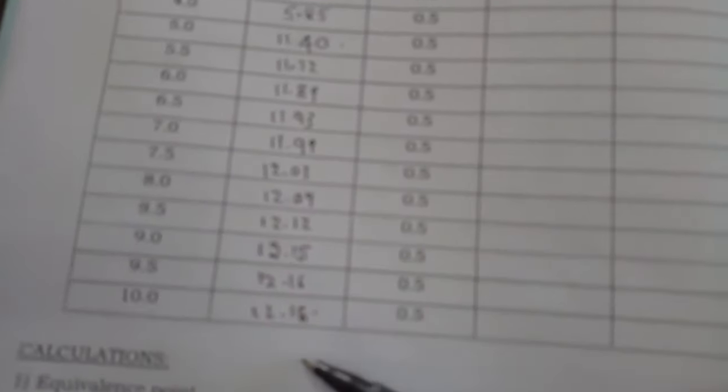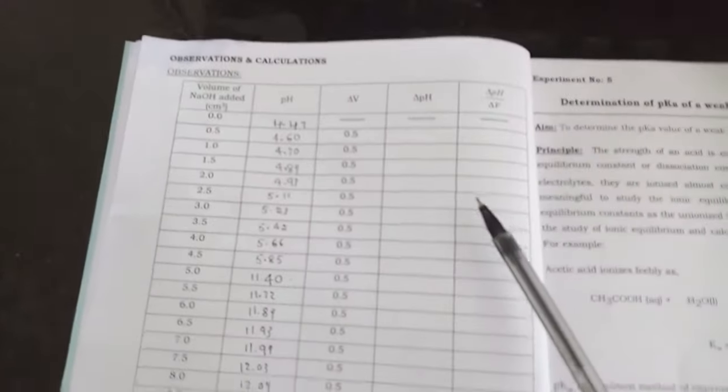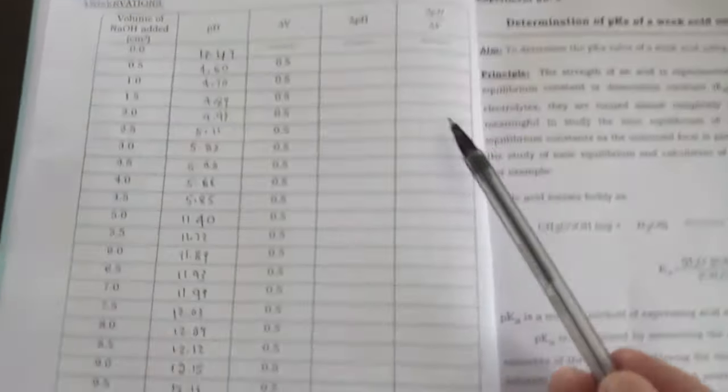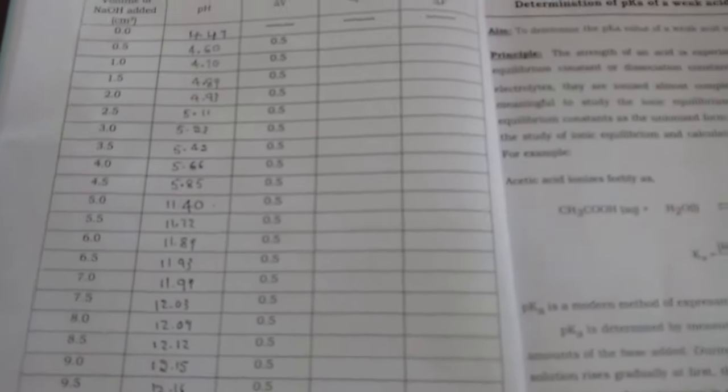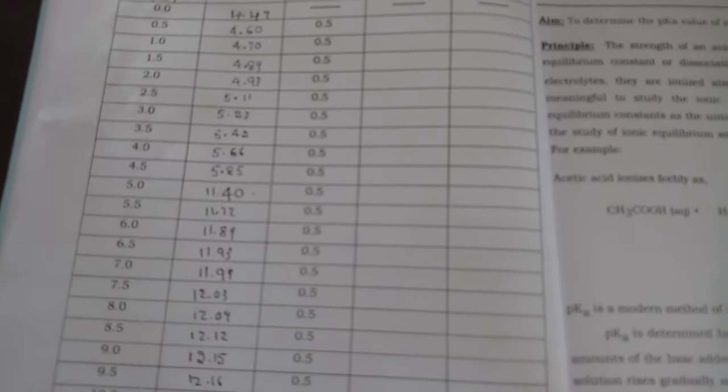Now here we can see near the end point there is sudden change in the pH, from 5.85 to 11.40. Then further there is slight increase in pH upon adding NaOH. So using these values we can calculate delta pH and delta pH by delta V. Based on that we can draw the graph.